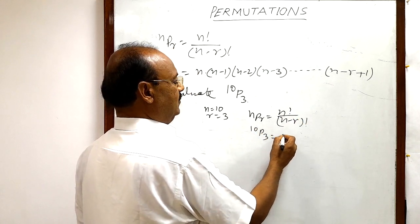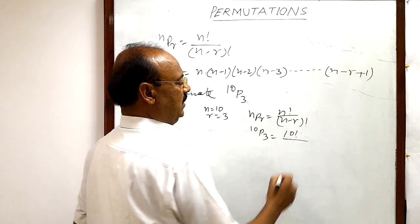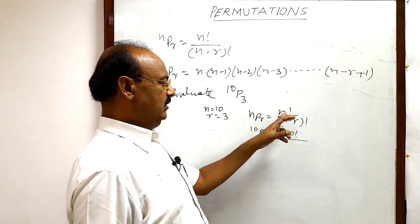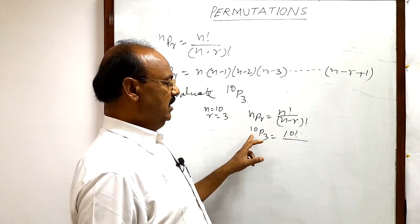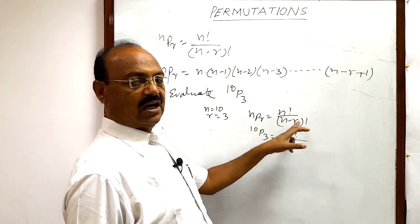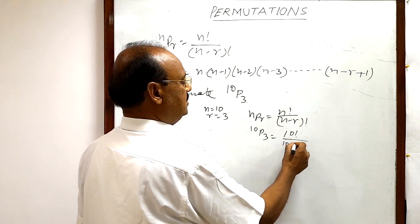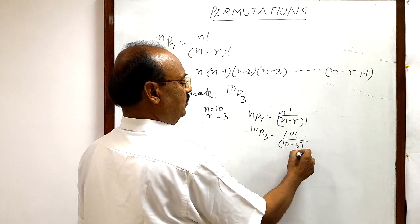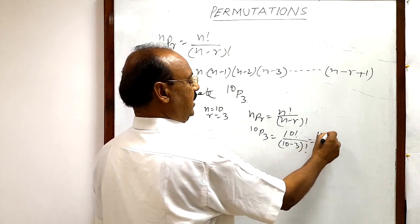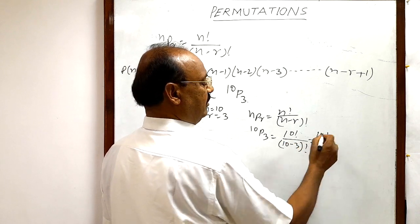10P3 will be how much? 10 factorial. In place of N factorial we are writing 10 factorial. N is equal to 10 and R is 3, so N minus R factorial means 10 minus 3 factorial, and this is equal to 10 factorial by 7 factorial.